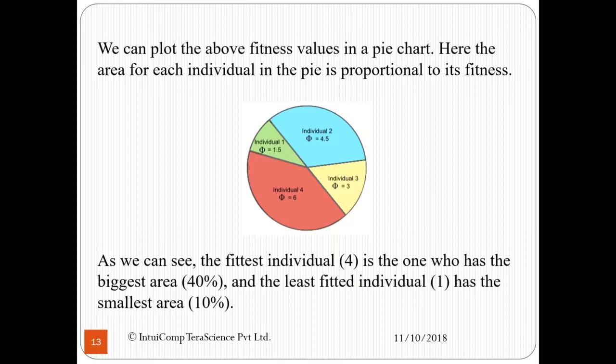We can plot the above fitness values in a pie chart. Here, the area for each individual in the pie is proportional to its fitness. This is because the algorithm we will be considering is called fitness proportionate selection or roulette wheel selection. Individual 1 is assigned the green slice with a fitness of 1.5, individual 2, 4.5, individual 3, 3, and individual 4, 6. Since individual 4 has the highest fitness, it occupies the highest amount of space in this pie. As you can see, the fittest individual is the one who has the biggest area and the least fittest individual has the smallest area.